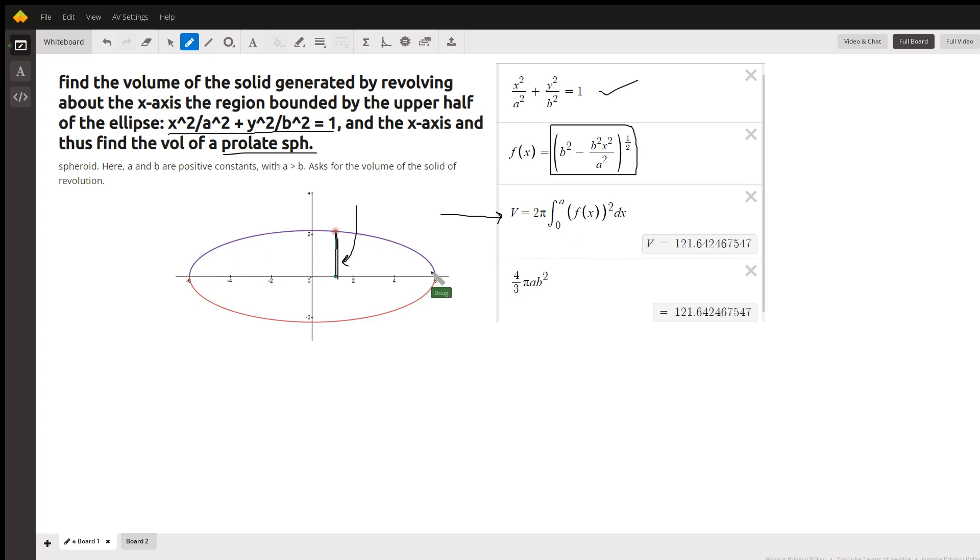Since this is an even function, we could just double from zero to a. Of course, it's the radius squared, and there's the volume in that case and it looks like this is the result.